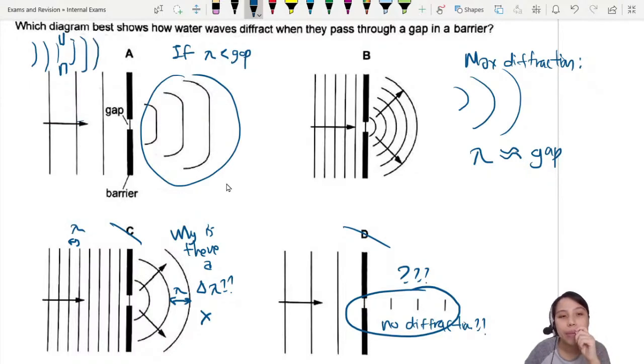But here you see the gap is much, the gap is so small. Wavelength is so big. Something's not quite right here. Okay, never mind. Let's look at B. Maybe B is the best choice already.